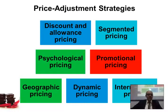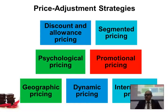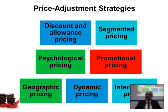Geographical pricing considers how distance and transportation factor into pricing — we'll cover this more on the slide. Dynamic pricing is when the price changes depending on available information. International pricing is when you sell in different countries and adjust based on different economies, social status, or local cultural perceptions.